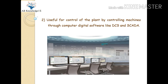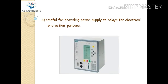The second use is for control of the plant by controlling machines through computer digital software like DCS and SCADA. These software systems are generally dependent on AC power under normal conditions. However, their power supply sources are generally provided by UPS panels. In case AC power fails, the battery banks come into line with the UPS panel and supply power to these computer software systems so you can control the plant even without AC power supply.